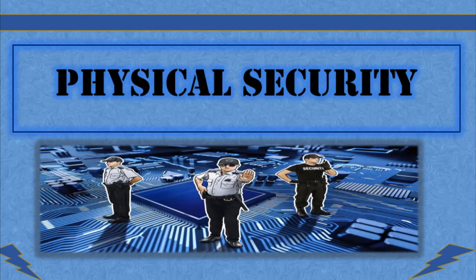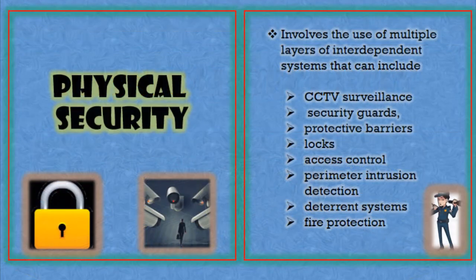To start with our video recording, let us take a look at the so-called physical security. Physical security refers to the physical measures that we employ in order to secure ourselves, but not only ourselves — also our properties and anything that surrounds us or that is important to us. So what are examples of this?